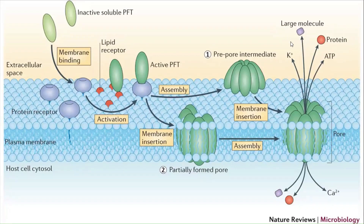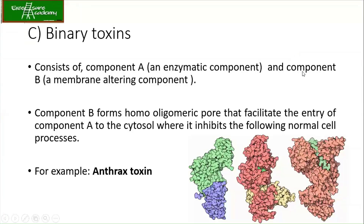Now moving on to binary toxins. We have covered alpha and beta pore-forming toxins. Binary toxins consist of component A and B, where A is an enzymatic component and B is the membrane-altering component. Component B forms a homo-oligomeric pore that helps in the entry of component A into the cytosol, where it inhibits the normal cell process.